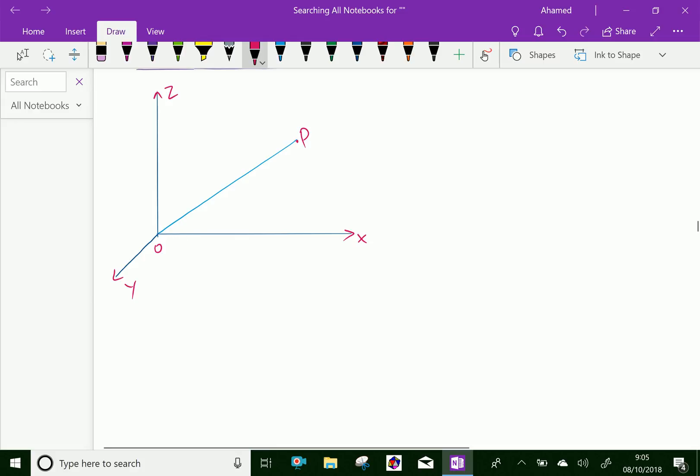Now, you have to find the direction cosines of this line OP. Let alpha be the angle between line OP and the X axis. Beta is the angle with the Y axis, and gamma is the angle of line OP with the Z axis. This is angle gamma.